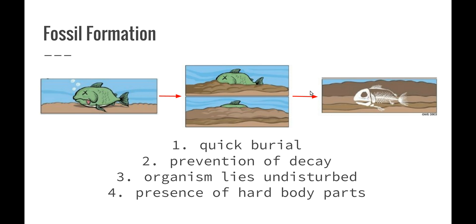Secondly, we need to prevent decay, so we need conditions such as a lack of oxygen, high acidity, very low temperatures, and low moisture to prevent decay by bacteria and fungi. Then we need the organism to lay undisturbed — completely covered by sediments — which helps to prevent scavenger organisms from breaking up and scattering the body parts. Lastly, we also need the presence of hard body parts. For fossilization to occur, organisms need hard parts such as bone, exoskeleton, teeth, or shells.